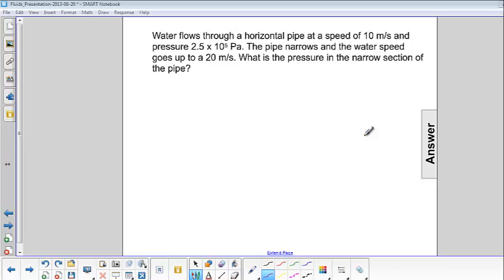Water flows through a horizontal pipe at a speed of 10 meters per second and pressure of 2.5 times 10 to the fifth pascals. The pipe narrows and the water speed goes up to 20 meters per second. What is the pressure in the narrow section of the pipe?